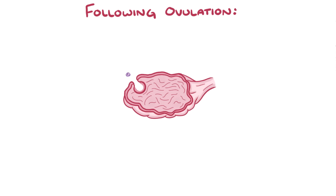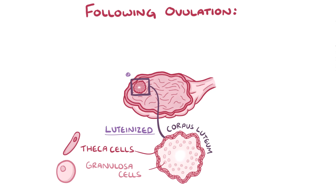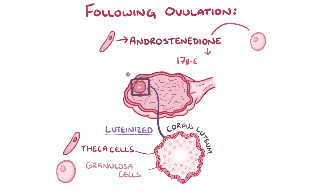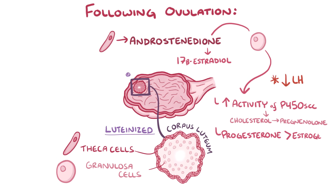Following ovulation, the remnant of the ovarian follicle becomes the corpus luteum, made up of luteinized theca and granulosa cells — meaning these cells have been exposed to the high LH levels that occurred just before ovulation. Luteinized theca cells keep secreting androstenedione, and luteinized granulosa cells keep converting it to 17-beta-estradiol. However, luteinized granulosa cells also respond to the low LH concentrations present after ovulation by increasing the activity of cholesterol side-chain cleavage enzyme, or P450SCC, which converts more cholesterol to pregnenolone, a progesterone precursor. So luteinized granulosa cells secrete more progesterone than estrogen during the luteal phase.